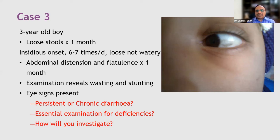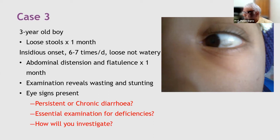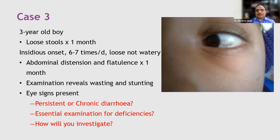Fecal calprotectin is not appropriate here because this is not inflammatory colitis — it is a marker of lower colon inflammation. This child clearly has a problem in the upper GI tract, not the lower GI tract: there are no mucoid stools, no bloody stools, and no abdominal pain. Rather, there is abdominal distension and flatulence due to fermentation of sugars by intestinal bacteria. Malabsorption always occurs in the proximal intestine — the duodenum or ileum — and beyond the ileum, you see colitis symptoms rather than malabsorption.